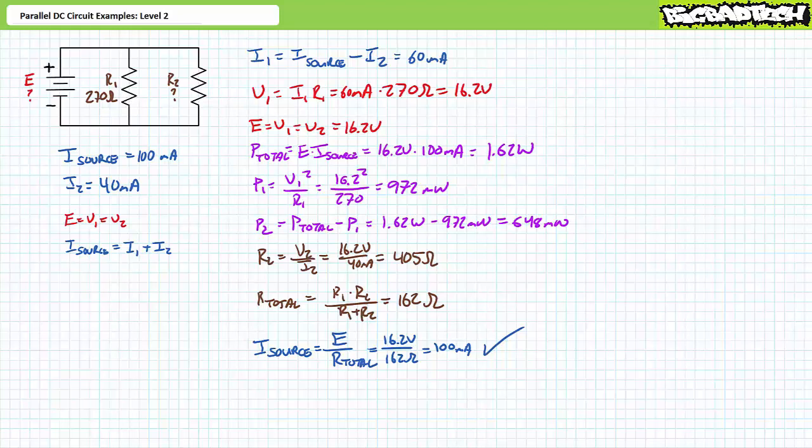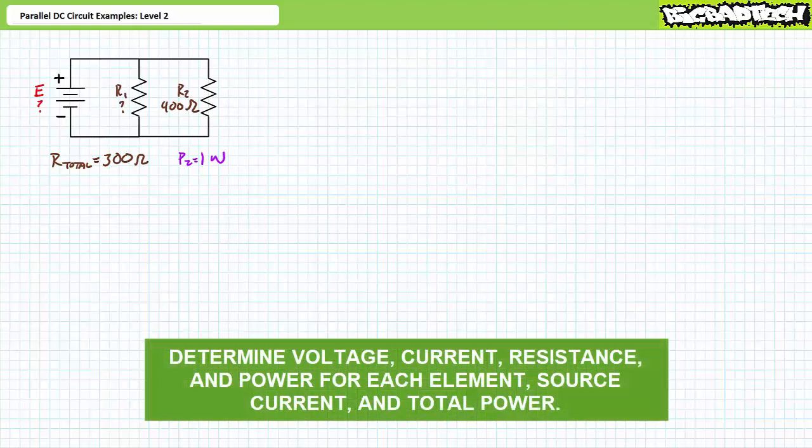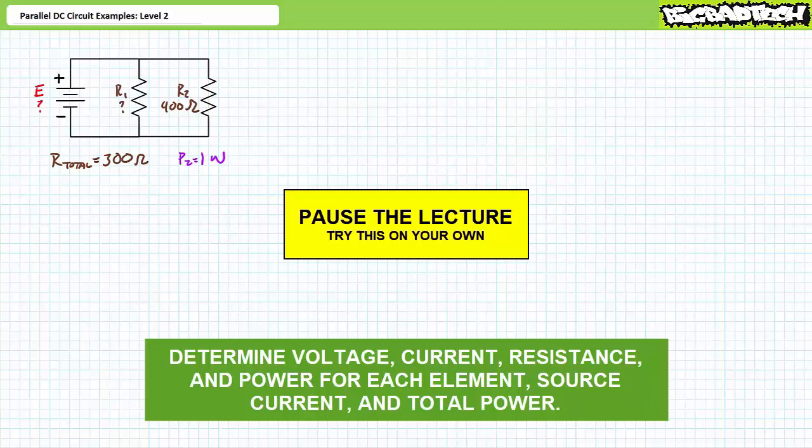Our next illustrated example features an unknown voltage source providing power to a parallel combination of R1, an unknown resistor, and R2, a 400-ohm resistor. It is additionally known that the total resistance seen by the source is 300 ohms, and the power dissipated by the second component is 1 watt. We're being asked to solve for the voltage drop across each element, the current through each element, the power dissipated by each element, the source current, and the total power. Pause the lecture and try this on your own.